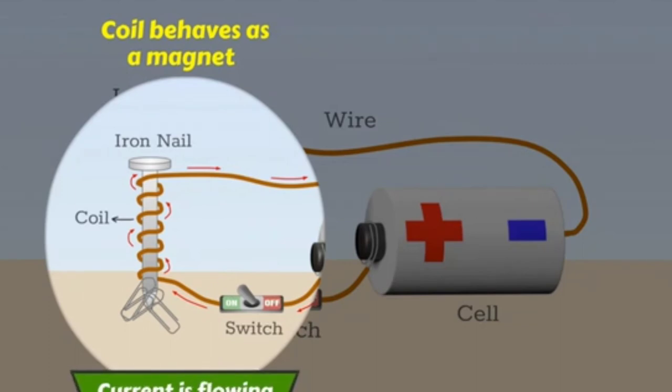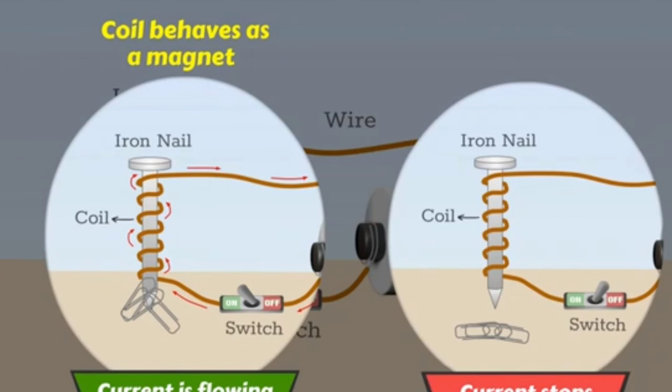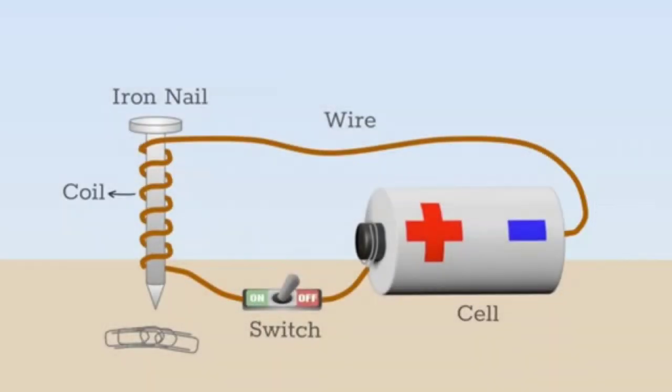The coil behaves as a magnet when the current flows through it. When the current stops, the coil loses its magnetism. Such a coil is called an electromagnet.